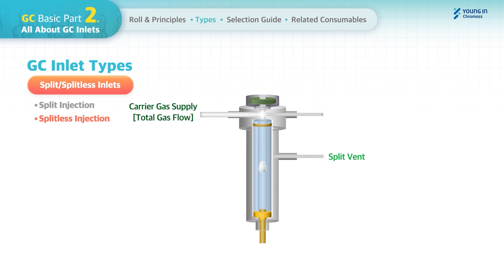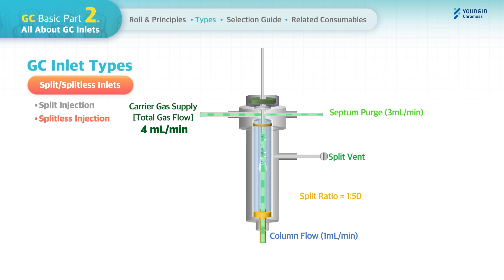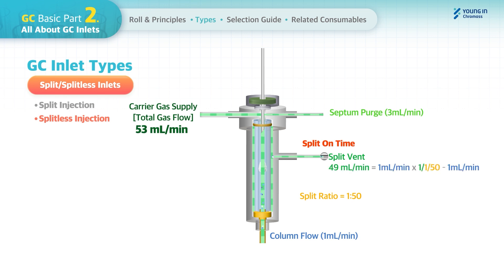With the splitless injection mode, the total gas flow goes to the septum purge and the column flow initially. For example, with a column flow of 1 mL/min and a split ratio of 1:50, the split ratio is applied at split-on time and the total gas flow is about 4 mL/min. After sample injection, the sample remains in the liner briefly before entering the column. The split vent line is closed until split-on time, after which it opens and total gas flow is adjusted accordingly.